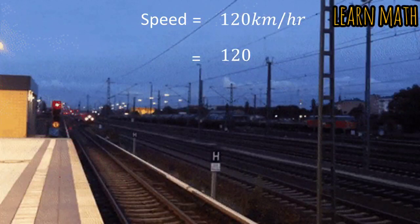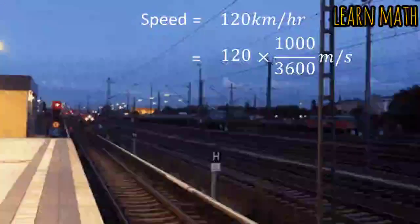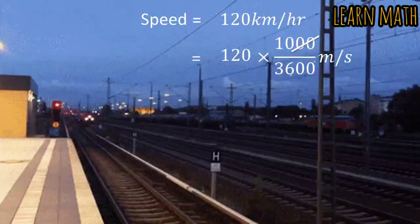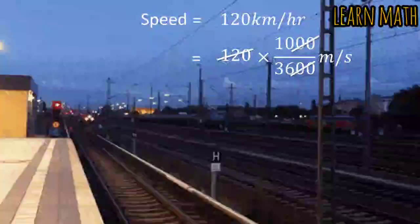So, we will multiply 120 by 1000 divided by 3600. We will simplify this, cancel this zero with this and divide 120 by 12.